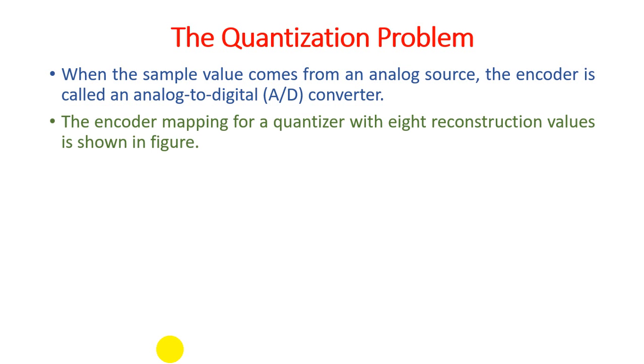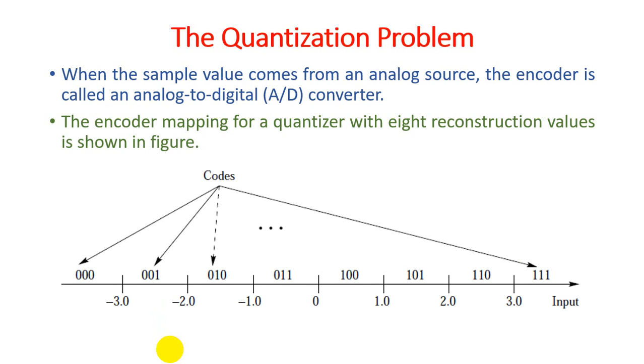The encoder mapping for the quantizer with eight reconstruction values is shown in the figure. For example, we have samples from minus three to three. The total number of values is one, two, three, four, five, six, seven. So you can see seven values in a particular range of codeword assigned. That output we have to use.